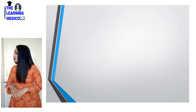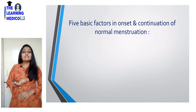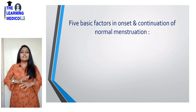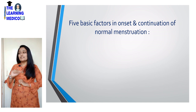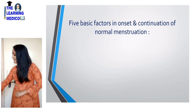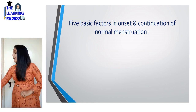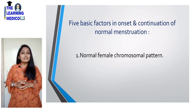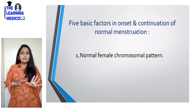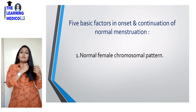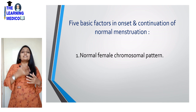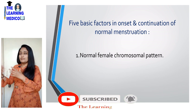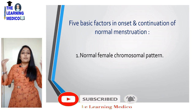Next are the five basic factors which are necessary for the onset and continuation of normal menses. The first factor is the normal female chromosomal pattern, which is necessary for the proper development of the female reproductive organs and, in turn, proper menses.